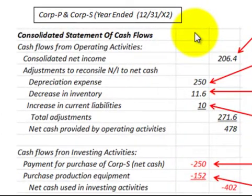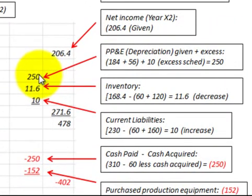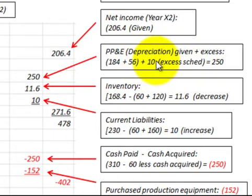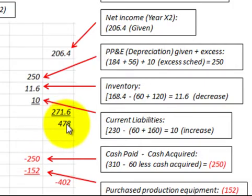For the consolidated statement of cash flows, first looking at cash flows from operating activities, we have consolidated net income of $206,400. Using the indirect method, we make adjustments to reconcile net income to net cash. We add back depreciation expense of $250,000 for the parent and subsidiary, plus the $10,000 excess amortization from the excess schedule, totaling $250,000. We also add back a decrease in inventory of $11,600 and an increase in current liabilities. Net cash provided by operating activities is $478,000.